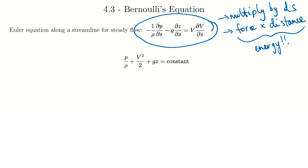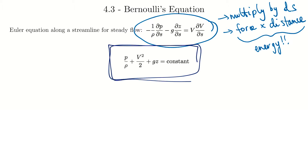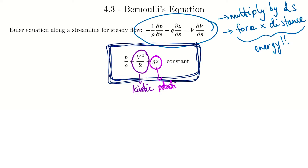Instead of having the limits of integration put right in, we just leave the constant this time. That gives us the famous Bernoulli equation. Looking at it, we see it's an energy balance: the half V squared term is kinetic energy, gz is potential energy, and the pressure term is the flow energy. That equals a constant. We'll do an example later to show how it's used — it's an extremely important equation, but also one of the most misused.